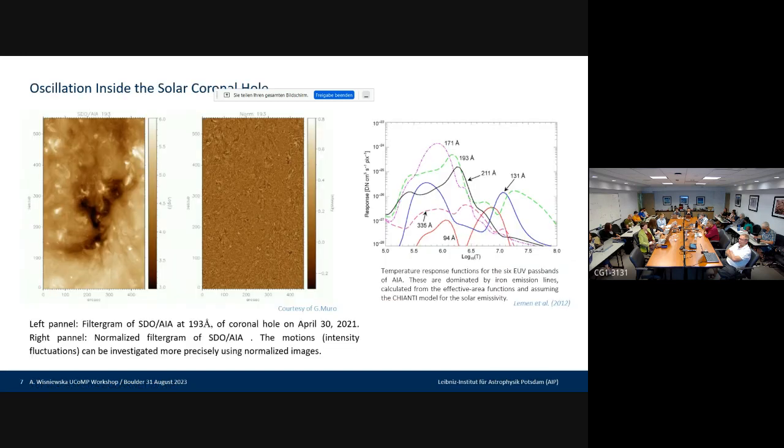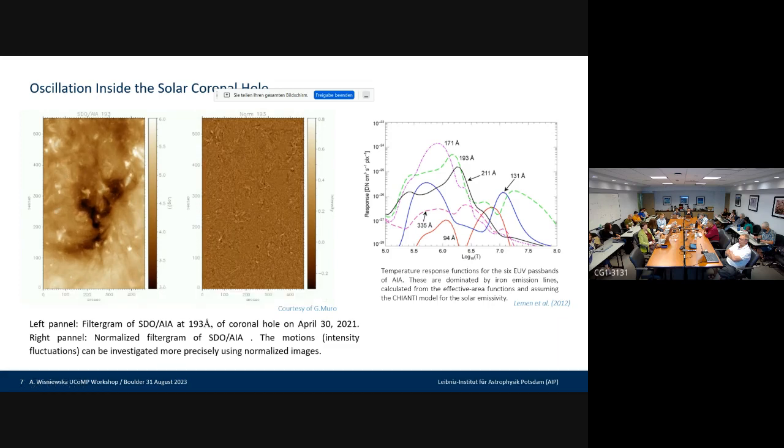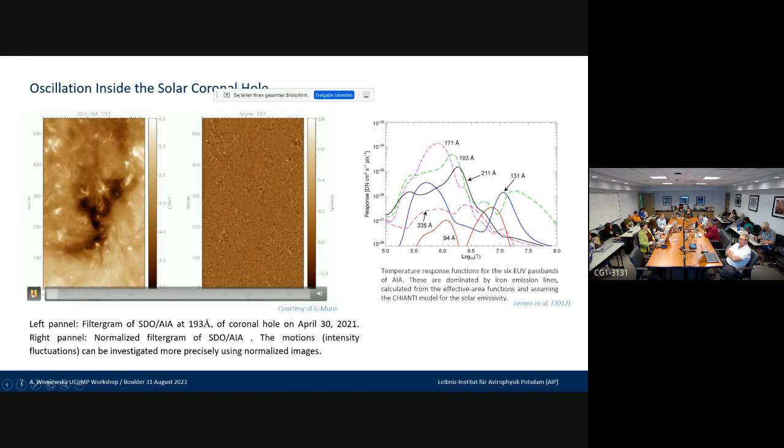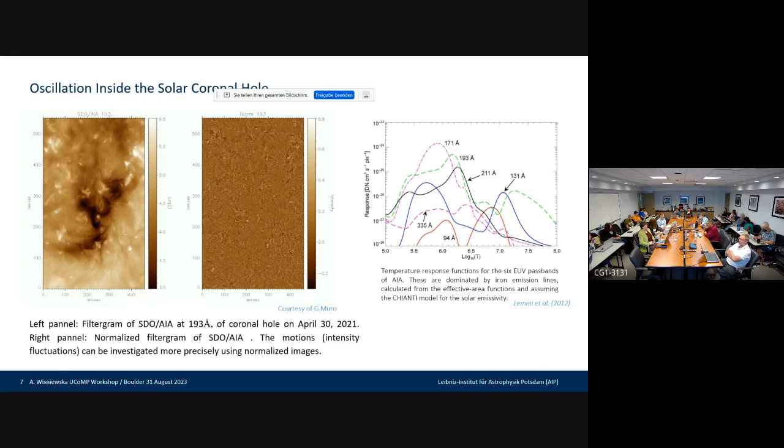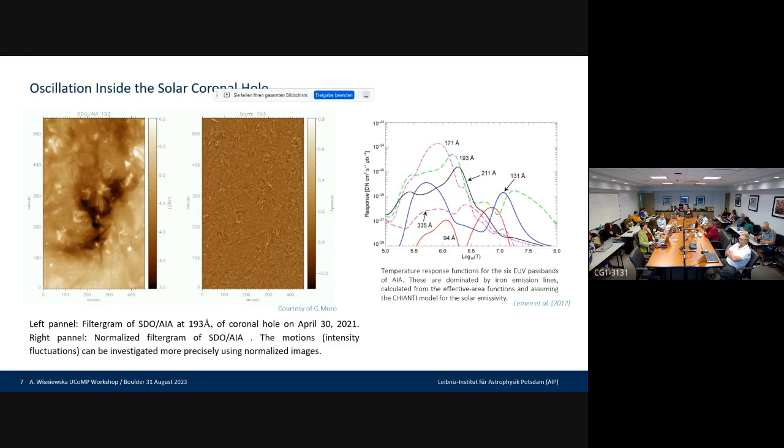I will show you how it looks like for the data. Basically we have the same data. On the left panel is original from SDO AIA at 193 angstrom, and on the right you have the normalized one. You can see that on the left side the motions of the plasma are pretty much visible, whereas on the right side we don't see really much movement. We thought that maybe this could give us some signal in Fourier transform.